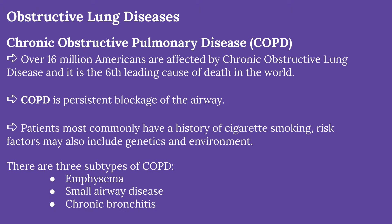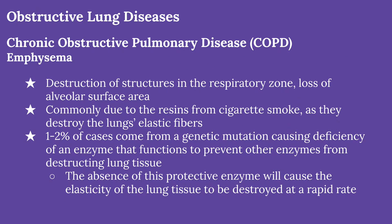COPD has its own subtypes: emphysema, small airway disease, and chronic bronchitis. Emphysema causes destruction of the respiratory zone and loss of alveolar surface tension, resulting in abnormally large bronchioles. This subtype is usually caused by resins from cigarette smoke, which destroy the lung's elastic fibers, causing loss of pulmonary compliance. In very rare cases, a genetic mutation may leave a patient lacking an enzyme that fights against enzymes that damage lung tissue, causing the lung's elasticity to be destroyed at a very fast pace.